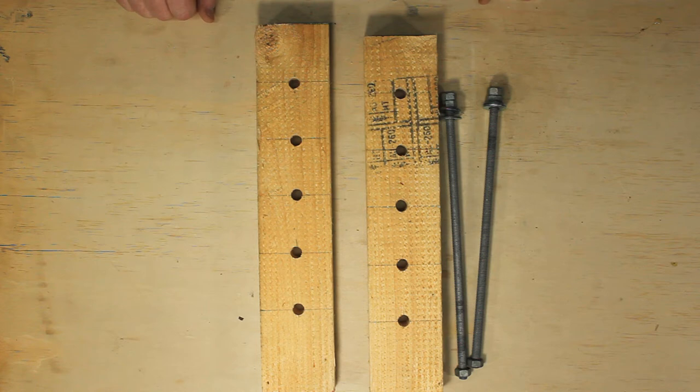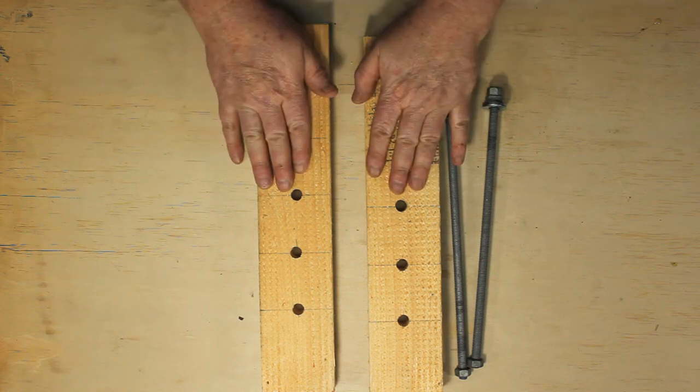This is an unassembled bolt clamp. This is one of the kinds of clamps that we're going to be making in the course.